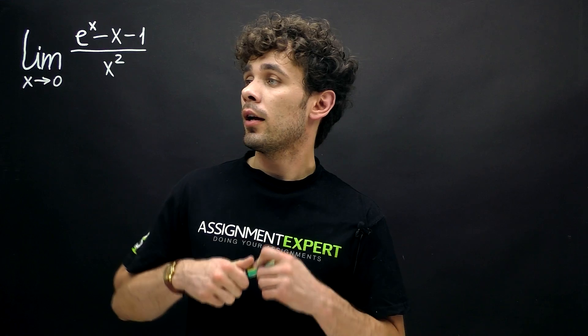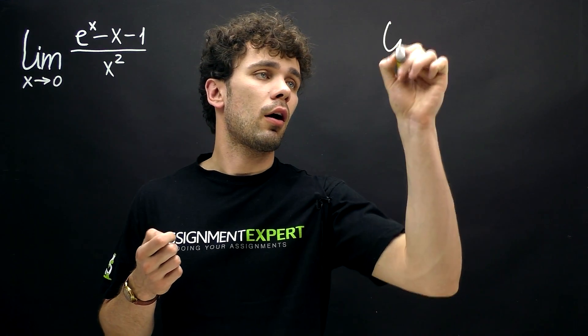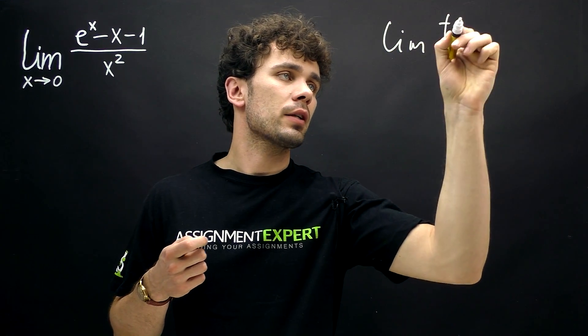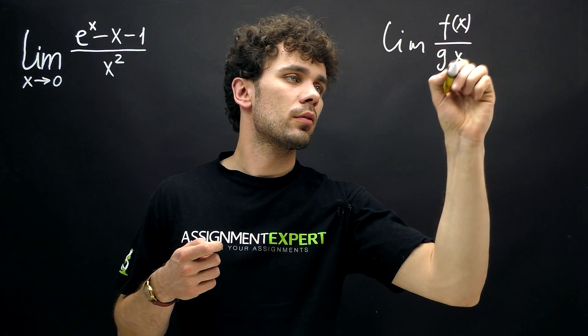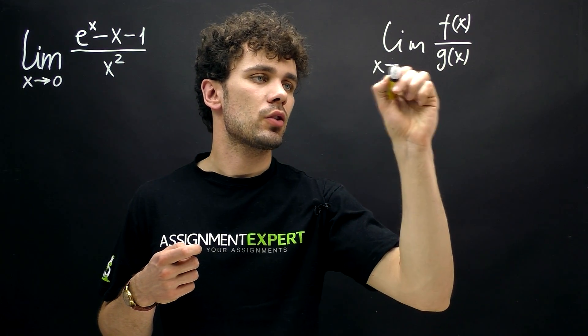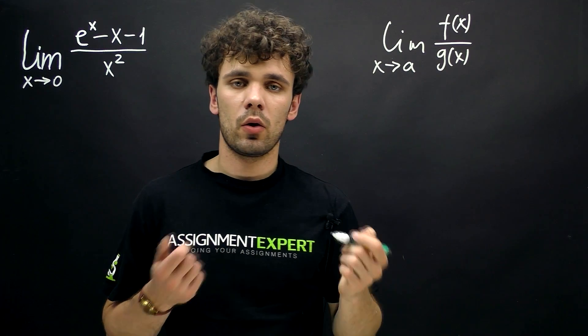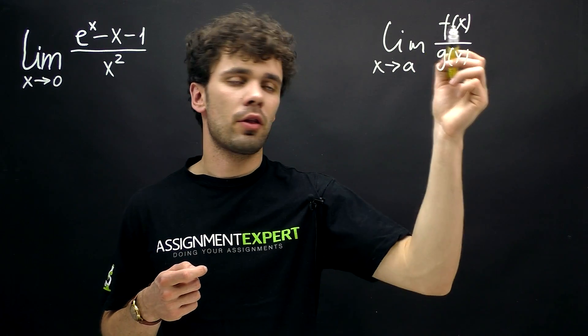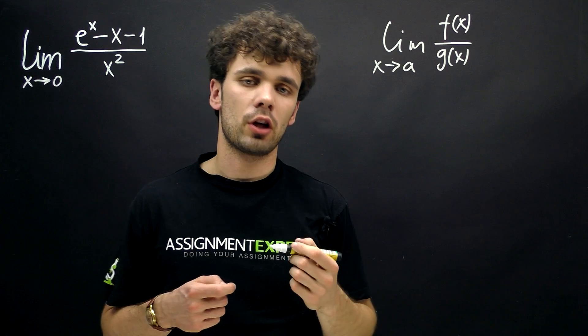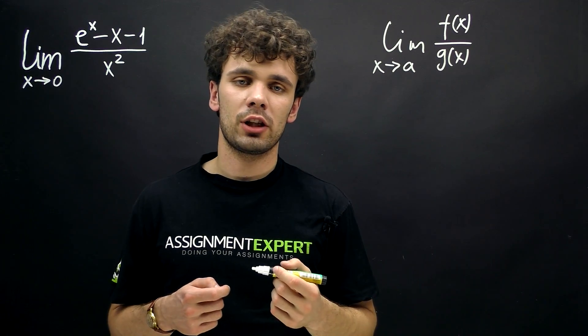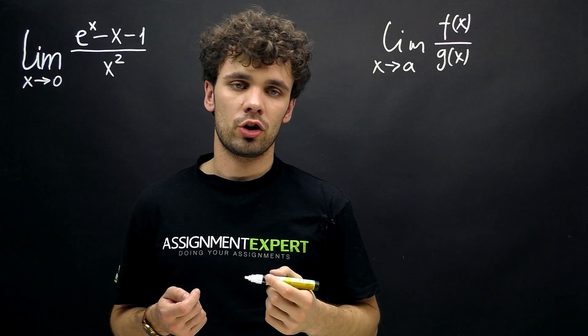Okay, let's see. Here we have a limit of a type f over g while x tends to a. This means that we have a function in the numerator and a function in the denominator. We can solve such a limit using L'Hôpital rule, but there are two conditions.